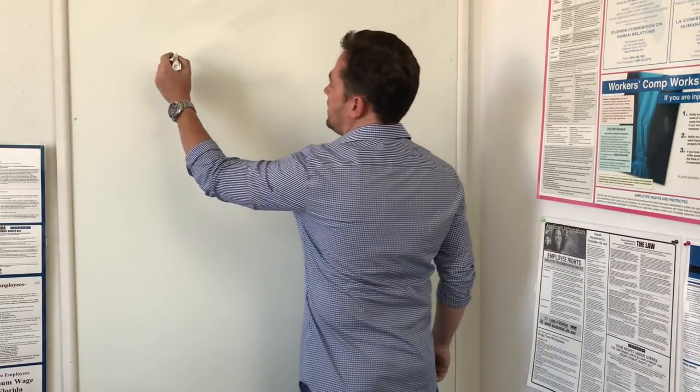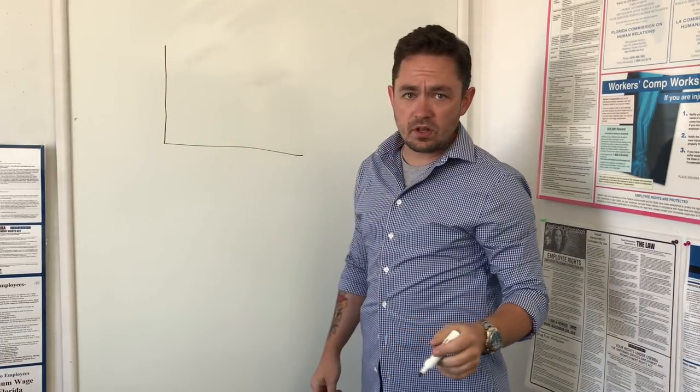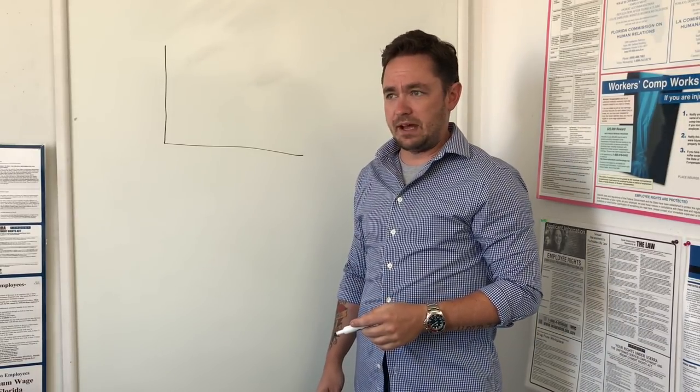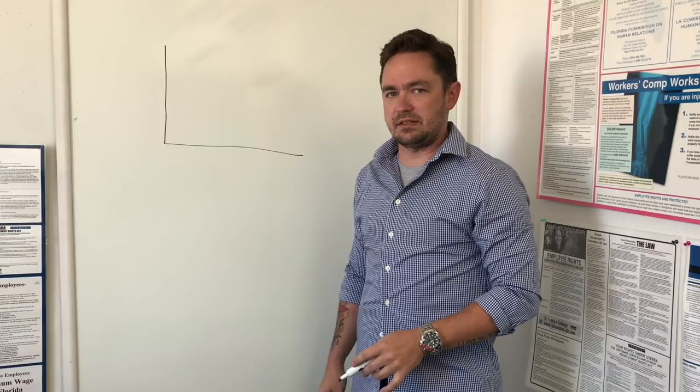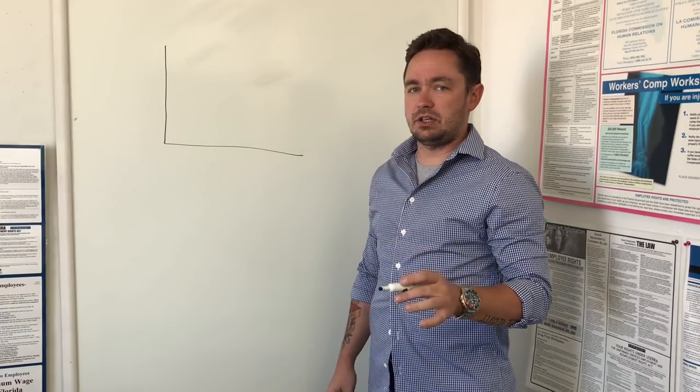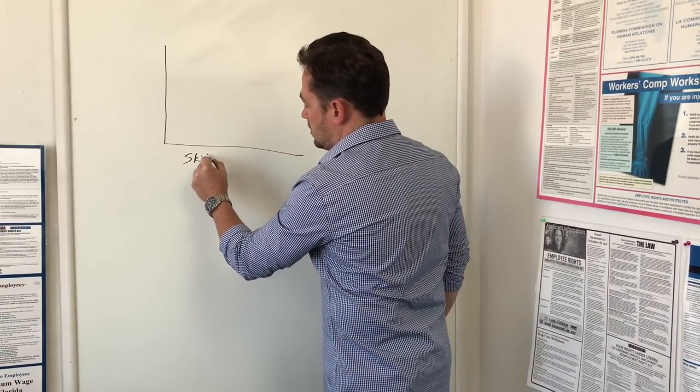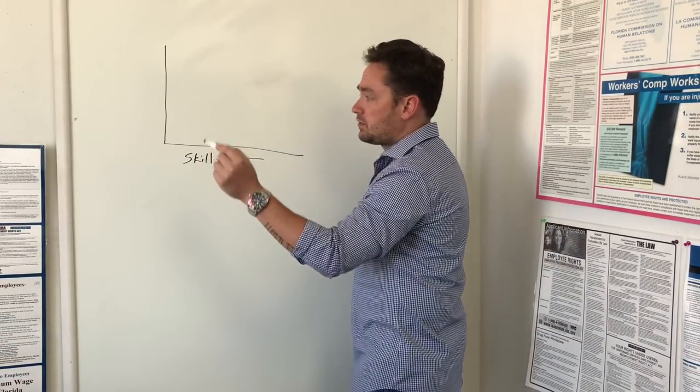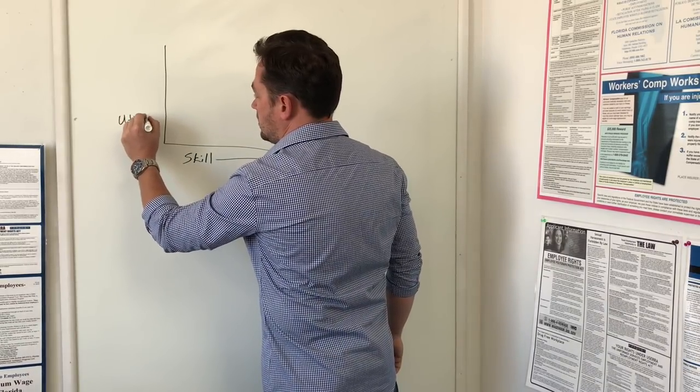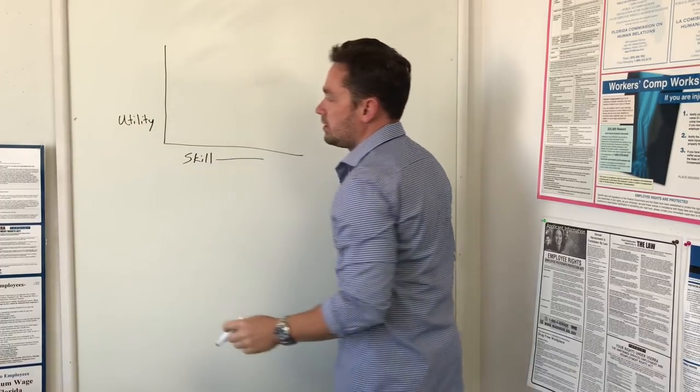So what we have is this graph right here. And on this graph, we have two axes. These two axes are skill and usefulness. Skill being down here, usefulness or utility being up here.